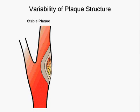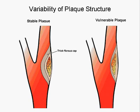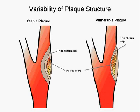Carotid plaques can be categorized by their structure. Some have a thick and stable fibrous cap, while others have a thin, vulnerable fibrous cap. Under the fibrous cap is a soft necrotic core.